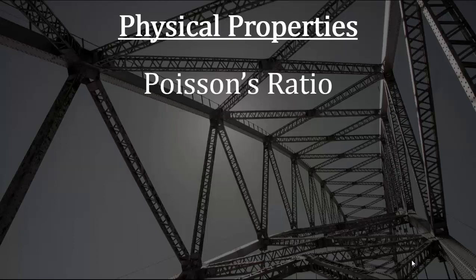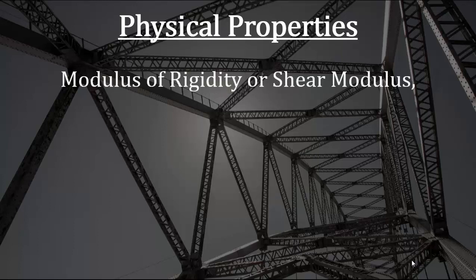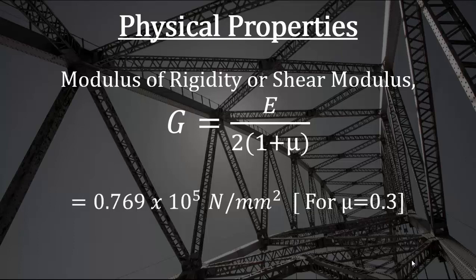Now coming to Poisson's ratio — it is not constant for steel. When steel is in the elastic range, Poisson's ratio is 0.3, and in the plastic range it is 0.5. The modulus of rigidity or shear modulus is given by G = E / (2×(1+μ)). For steel in the elastic range, with μ = 0.3, the value of G is 0.769×10⁵ Newton per millimeter square or megapascal.